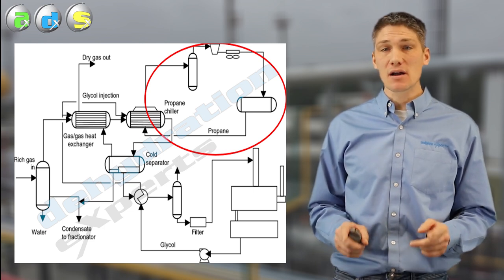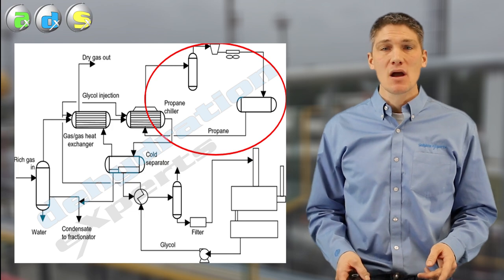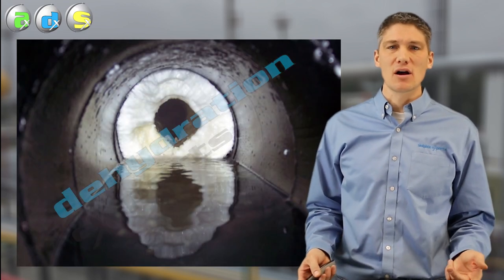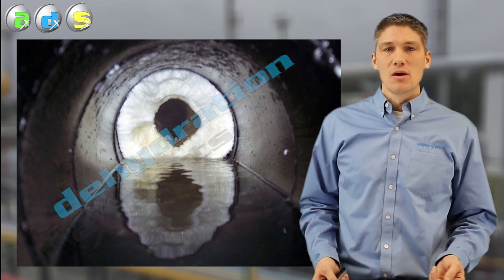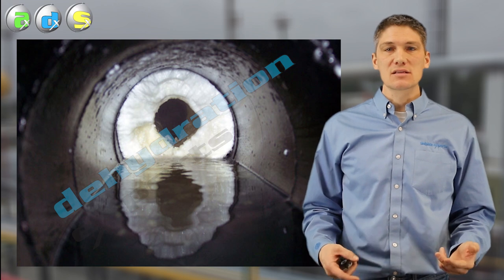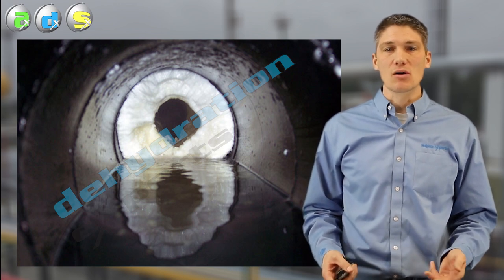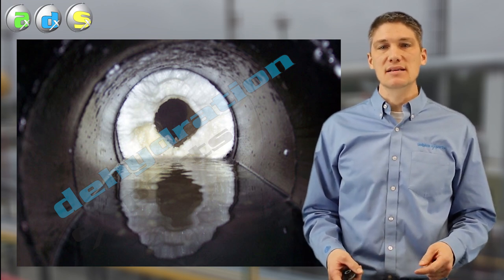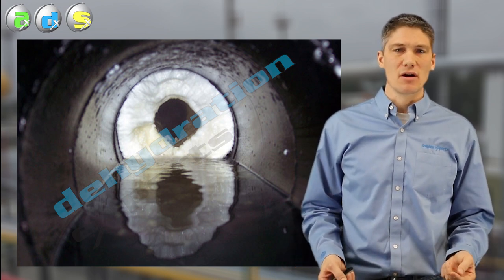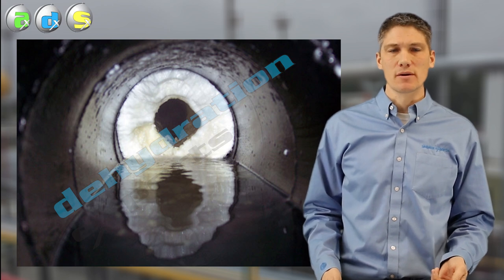At the same time hydrocarbons condense from the gas stream, water is also condensing from the gas stream. Because of the cold temperatures within the process, the water would normally freeze or hydrate off as a solid which would eventually plug up the process. In order to prevent the condensed water from freezing, ethylene glycol is added to the process to act as an antifreeze, just like the glycol-based engine coolant in your car that prevents freeze-ups in the winter.